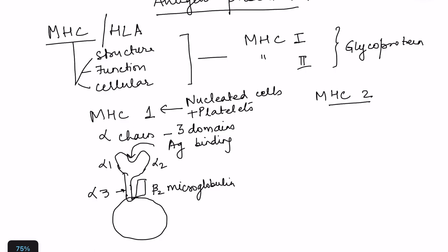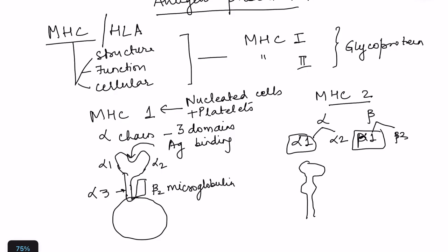MHC2 consists of two chains - alpha and beta. The alpha chain has alpha1 and alpha2 domains, and the beta chain has beta1 and beta2 domains. Similar to MHC1, there is an antigen binding groove, but here it is formed by the alpha1 and beta1 domains together. MHC2 is known as a heterodimer because it consists of two chains: alpha and beta.